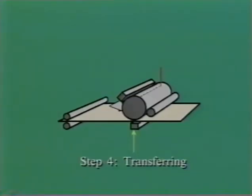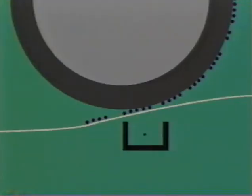Step 4, transferring. As the drum rotates, the paper and the drum move together. The toner on the drum is attracted off the drum and onto the paper by the charge from a transfer corona wire under the paper.